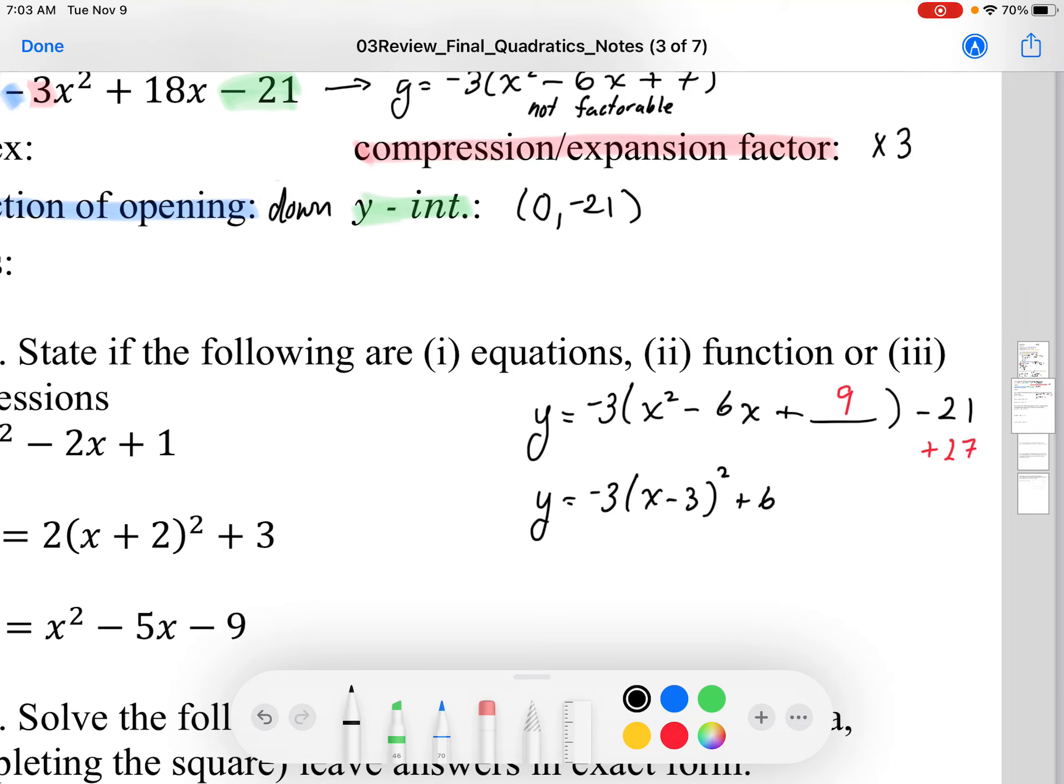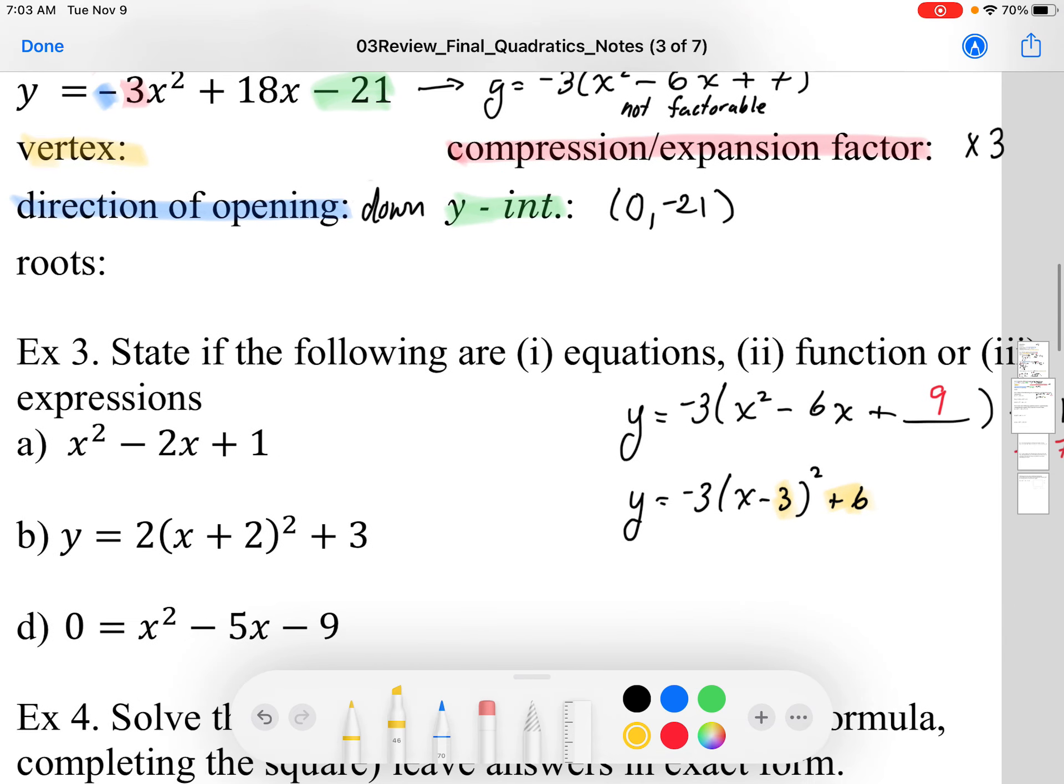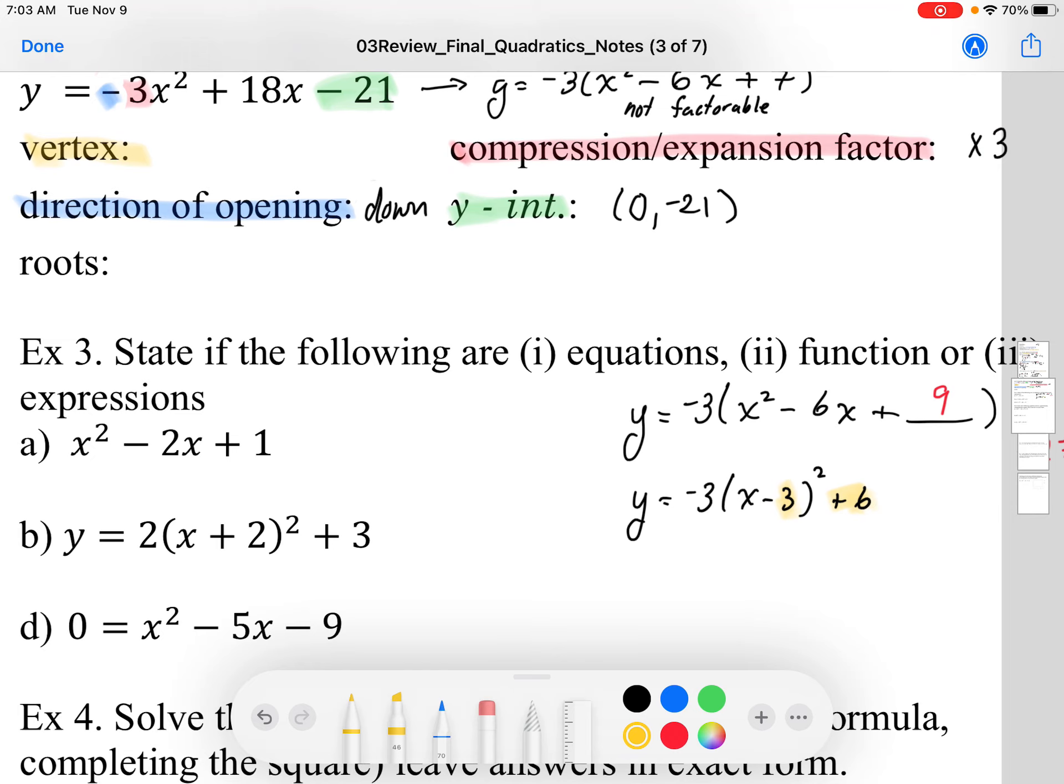The vertex value is going to be at 3. The vertex is going to be at 3, positive 6. Okay, so the vertex is going to be at x is positive 3, y is positive 6.